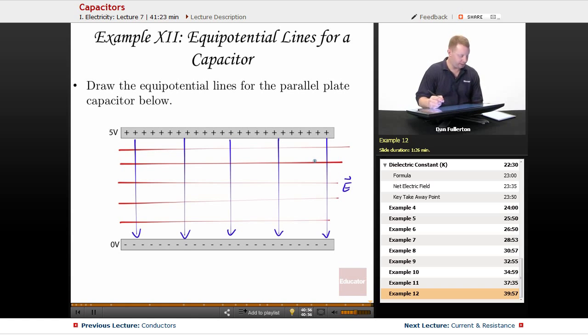All right, so these would be our equipotential lines where, and I suppose I probably have one extra in here, we go from zero volts to something like one volt, two volt, three volt, four volt, and finally to five volts up there.